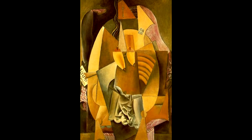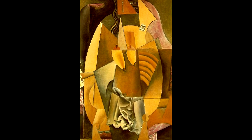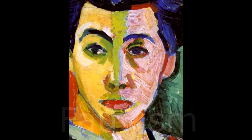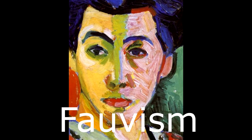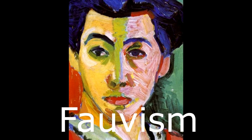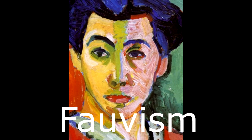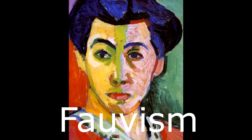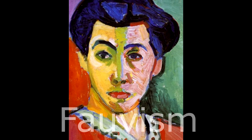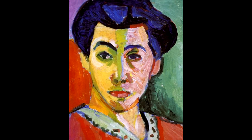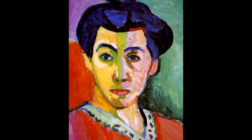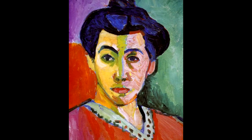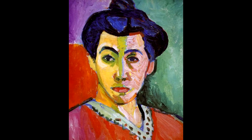The cubists took fauvism a step further. The fauvists wanted to scrap everything and return back to basic, simple art. They used flat patterns, distorted images and bright blocks of color. Fauvist is French for wild beast, for their violent approach to their art.